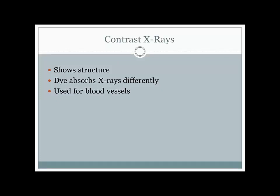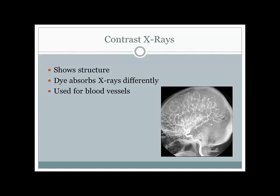Contrast x-rays can be really useful for detecting things like blood clots in the brain, hematomas which are bleeds in the brain, or even strokes. This contrast x-ray picture usually looks something like this—you can see the brighter white spots are the blood vessels that snake throughout the brain and they stand out really clearly. If there was a clot or a buildup somewhere, you could use this picture to see where that was located.